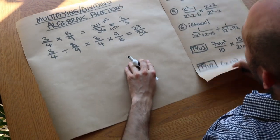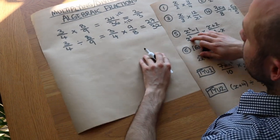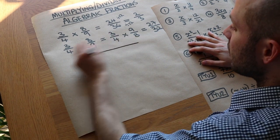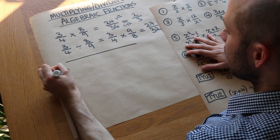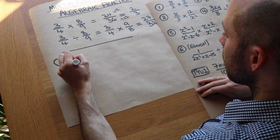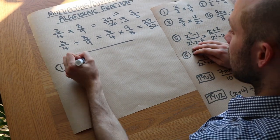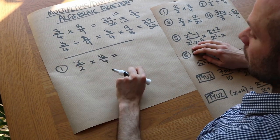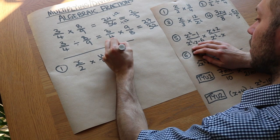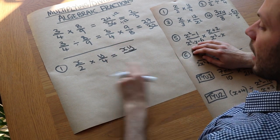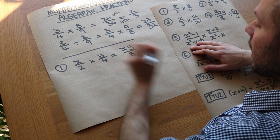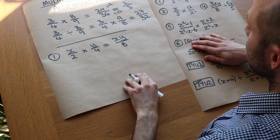The same principle applies with multiplying or dividing algebraic fractions. For example, x over 2 times by y over 4 — we just multiply the numerators, which gives xy, and 2 times 4 is 8, so we just get xy over 8.